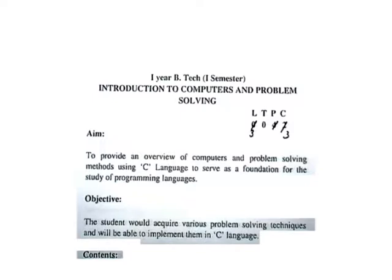Beyond structures we don't go in the first semester — pointers are not covered and files are not covered. Any standard C textbook would have all these chapters, but they are not taught in the first semester. C learning is completed in the second semester as a different course, which also covers algorithm-related content.